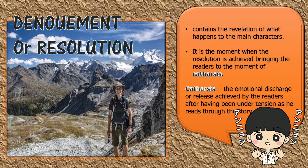The final part is called the denouement, or resolution. The resolution contains the revelation of what happens to the main characters. It is the moment when resolution is achieved, bringing the readers to the moment of catharsis — the emotional discharge or release achieved by the readers after having been under tension as they read through the story.